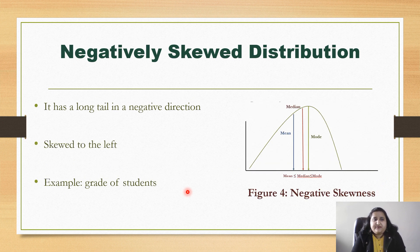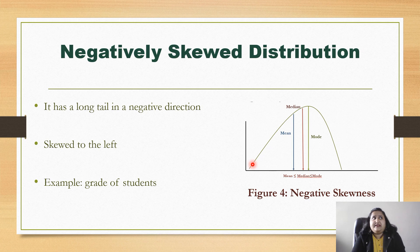For negatively skewed data, there is a long tail in the negative direction and it is skewed to the left. An example is grades of students in an exam where most students pass with good marks and only a very few score low marks. This is one example of negatively skewed data.